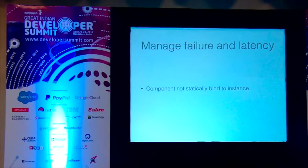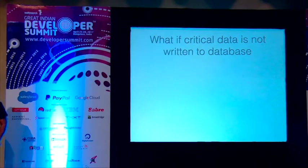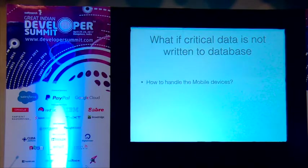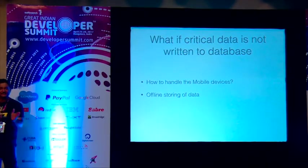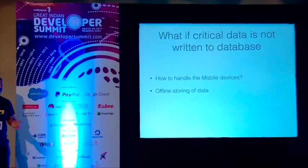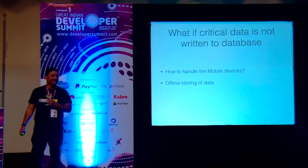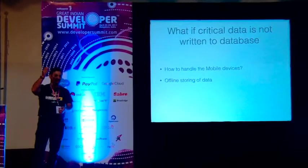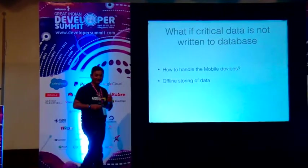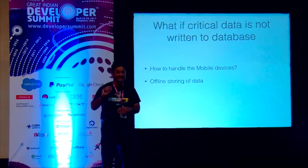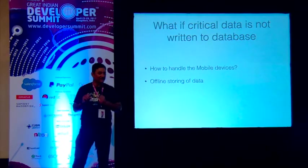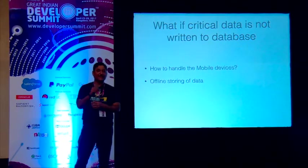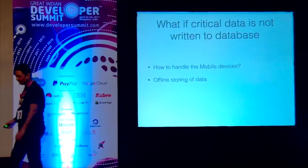Manage for failure and latency. What if critical data is not written to the database? You want to store it offline with an offline syncing process in place. You don't want to say your application only works when there is internet. For example, if I'm using a Fitbit and not connected to my phone, it should still track my steps because when it syncs later it will save the data. You should have a strategy to save the data.